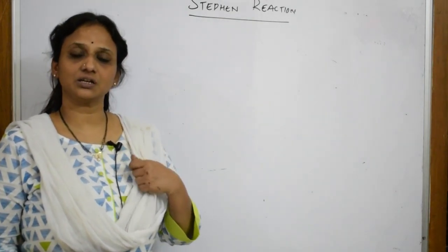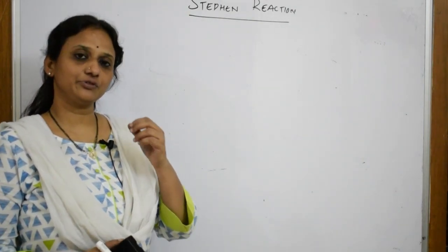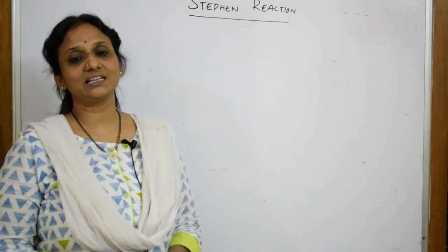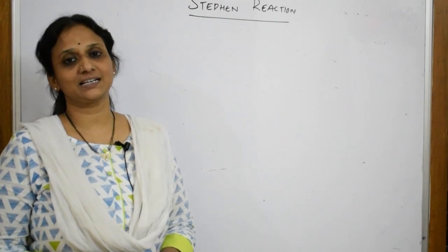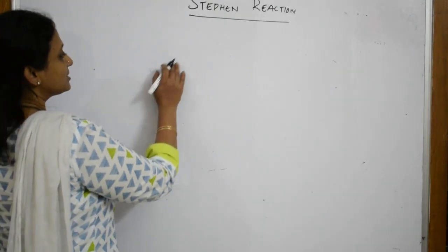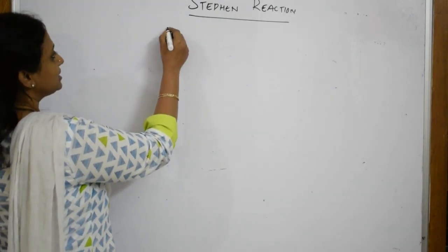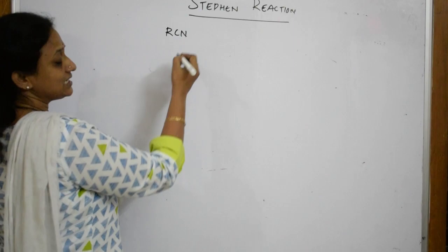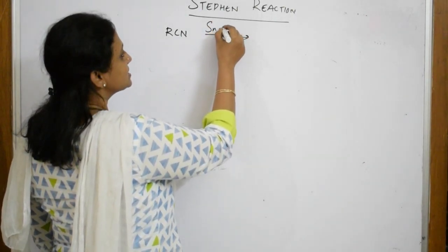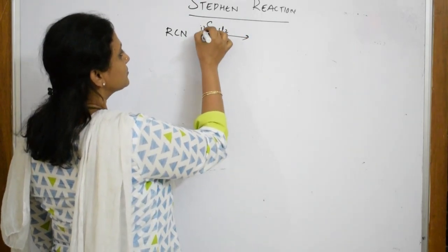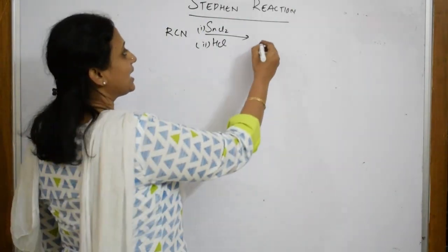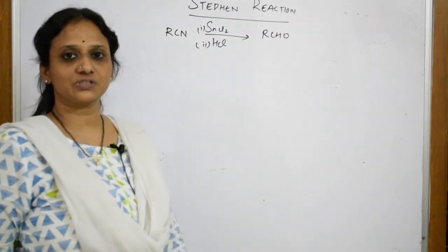What is Stephens reaction? Stephens reaction is basically the conversion of nitriles or alkyl cyanides, RCN, into their corresponding aldehydes, RCHO. This is done in the presence of reducing agents SnCl₂ and HCl. This conversion of RCN to RCHO is your Stephens reaction.